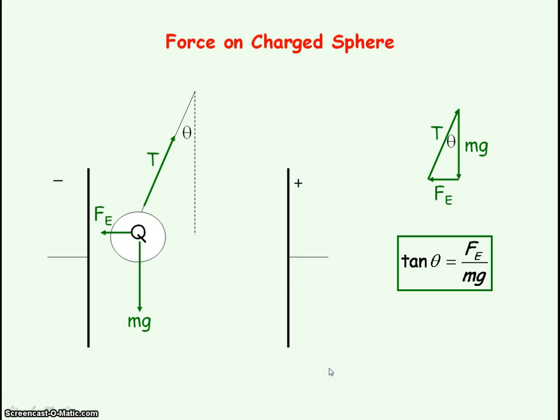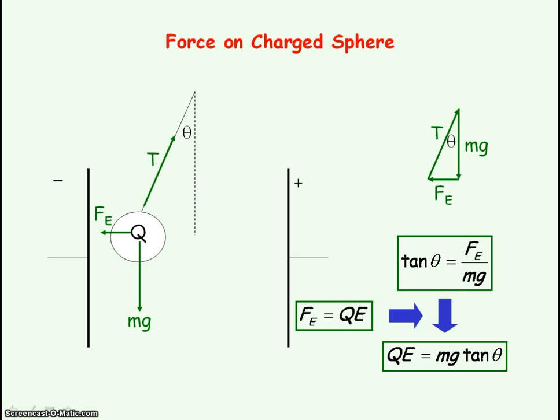From the definition of electric field strength, we can say that the electric force is equal to the charge times the electric field strength. So we can substitute for electric force into this equation and rearrange to make E the subject, so that Q times E will equal the weight times tan θ.